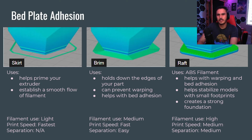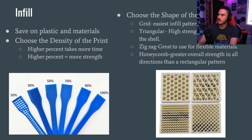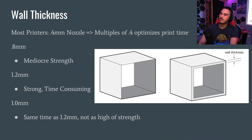Quick recap from the last video: we talked about bed plate adhesion and what the different types are and what we use them for. We talked about infill, the pros and cons of different densities and what different shapes do. And we finally talked about wall thickness and how that also affects the strength and print time of your print.